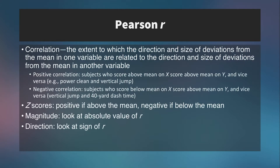A technical definition of correlation is the extent to which the direction and size of deviations from the mean in one variable are related to the direction and size of deviations from the mean in another variable. For a positive correlation, subjects who score above the mean on x also score above the mean on y — as in our vertical jump and power clean example. A negative correlation is when subjects who score below the mean on x score above the mean on y, such as vertical jump and 40-yard dash time.